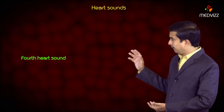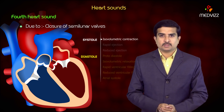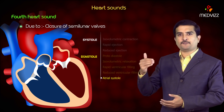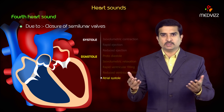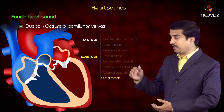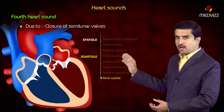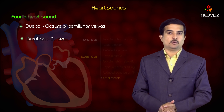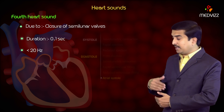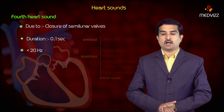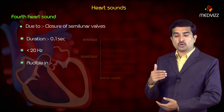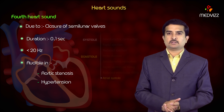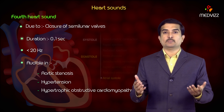Next is the fourth heart sound. The fourth heart sound is mainly seen during the last rapid filling phase, or the last phase of ventricular diastole, which is the atrial systole. So the fourth heart sound is mainly produced because of atrial systole. The duration is 0.1 second and the intensity is less than 20 Hz. It is more commonly audible in conditions like aortic stenosis, hypertension, and hypertrophic obstructive cardiomyopathy.